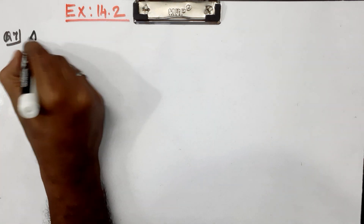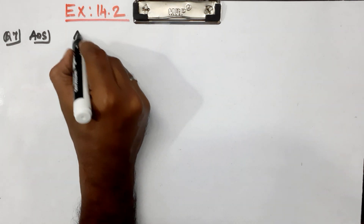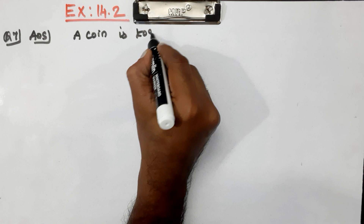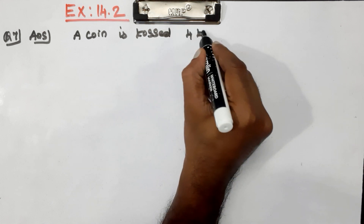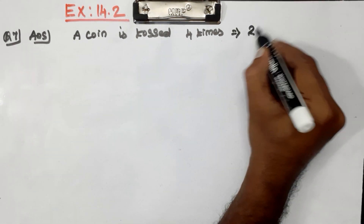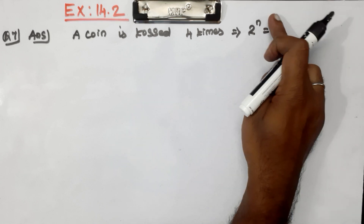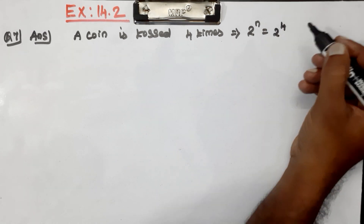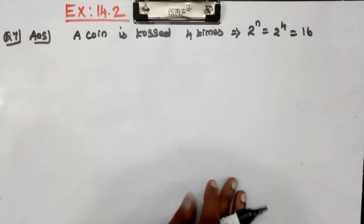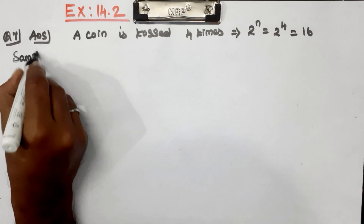Now, question number 7 answer. How many tasks? 4 times task. The total number of outcomes in the sample space: probability = 2 power n = 2 power 4 = 16. So the sample space has 16 elements.